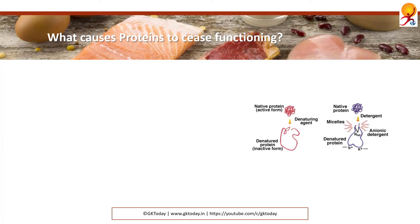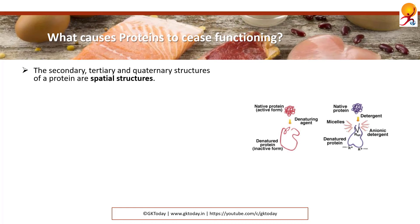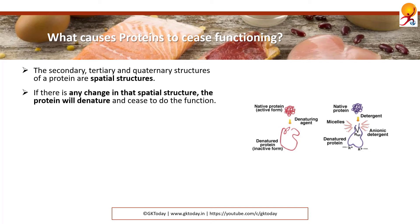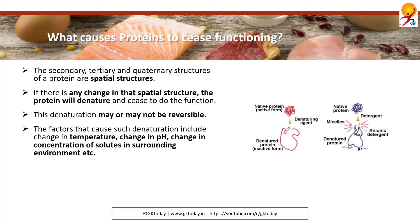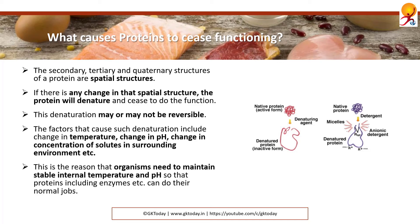What causes proteins to cease functioning? The secondary, tertiary, and quaternary structures of proteins are spatial structures, with one central bonded atom and everything else connecting through it. If there is any change in that structure, the protein will denature or disintegrate. This denaturation may or may not be reversible. The factors that cause it can be temperature, change in pH, or change in concentration of solutes in the surrounding environment. This is why organisms need to maintain a stable internal temperature and pH so that proteins, including enzymes, can perform their functions.